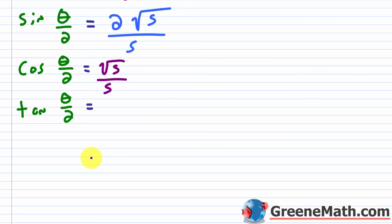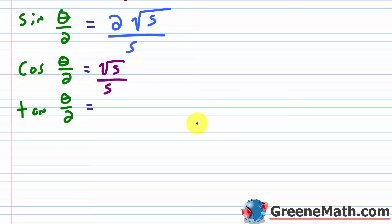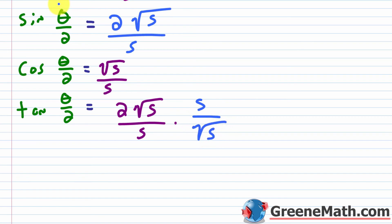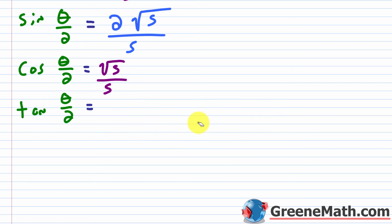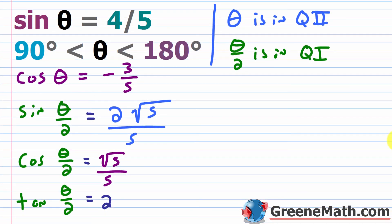For the tangent of θ/2, I can just use the definition of tangent: divide sine of θ/2 by cosine of θ/2. So we have 2 times square root of 5 over 5, divided by square root of 5 over 5. Dividing by a fraction means multiplying by the reciprocal: 2 times square root of 5 over 5, times 5 over square root of 5. The 5's and the square root of 5's cancel, leaving just 2. So the tangent of θ/2 is 2. To find cosecant, secant, and cotangent of θ/2, you just flip each of the three values we found.